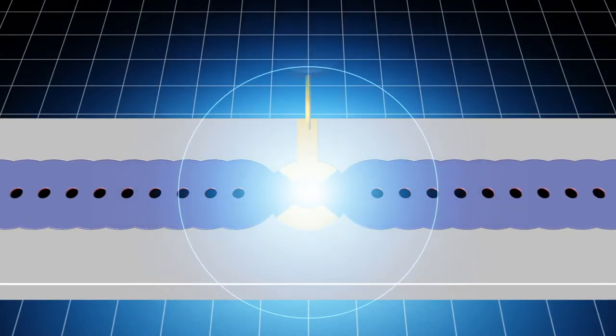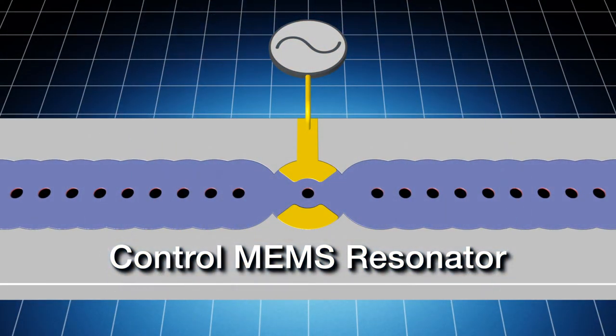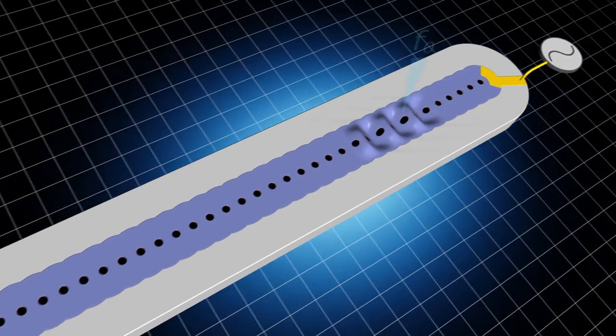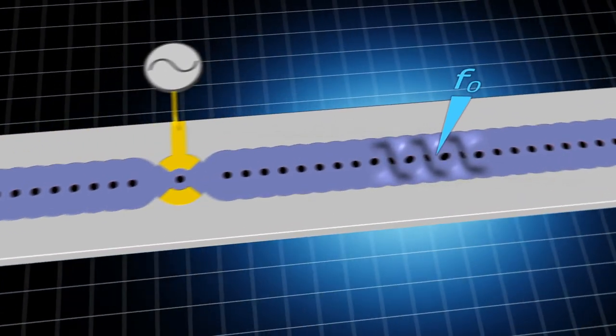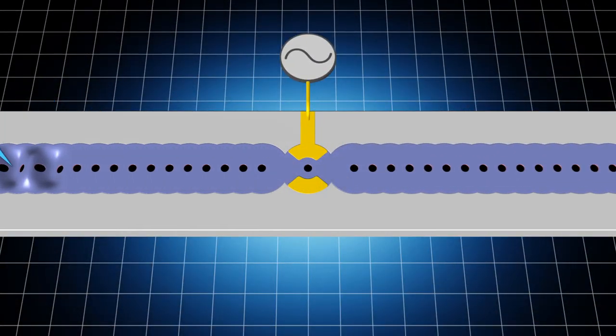Next, we placed a control MEMS resonator at the center of the waveguide. A phonon vibrating at the frequency f0 will normally propagate right through this resonator.